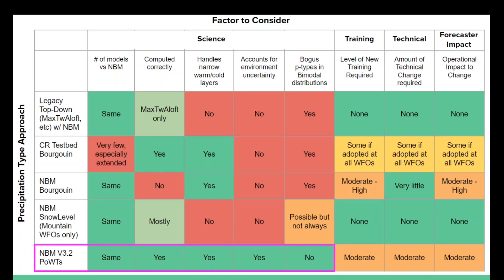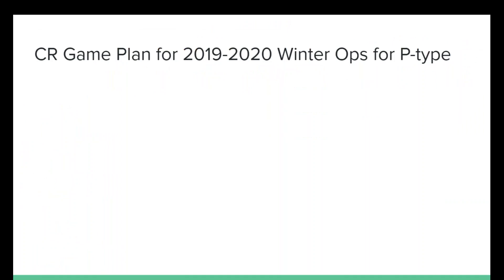To summarize all this information, I created a large comparison table laying out what each technique does and all the various factors, as we considered what to do for the game plan this winter. NBM 3.2 is great in the science area, but there are issues in the training, technical, and operational impact areas for forecasters. In the end, we figured the best plan going forward is to leave things as they are — these techniques have served us well for several years, so we'll hold on changes for at least right now.